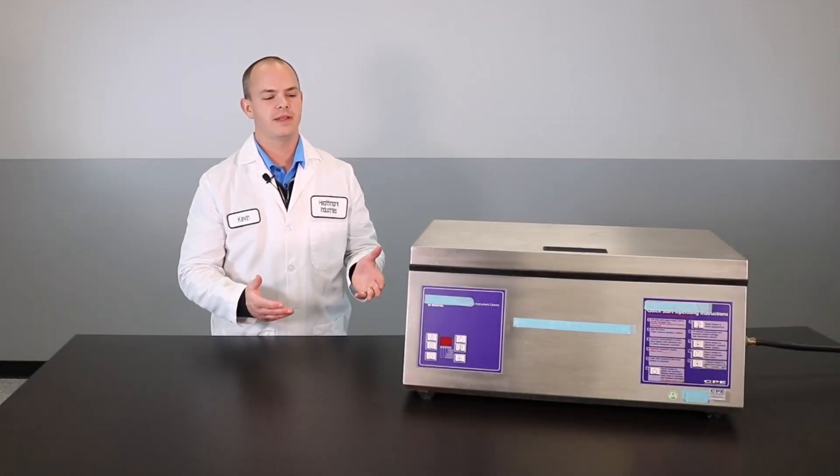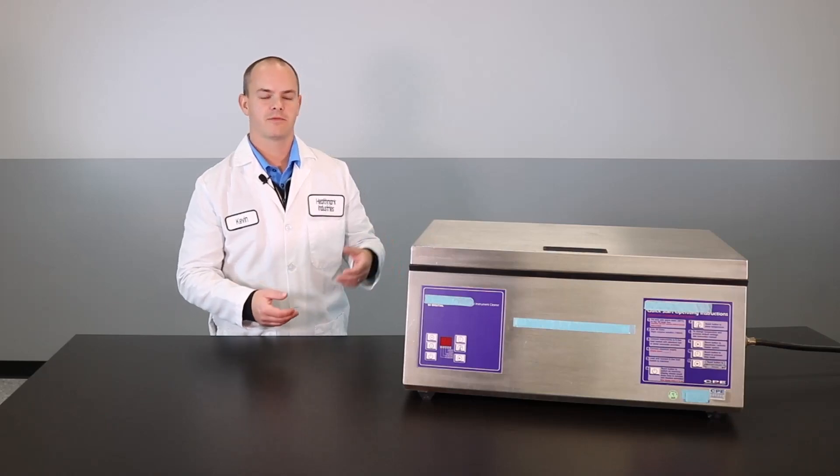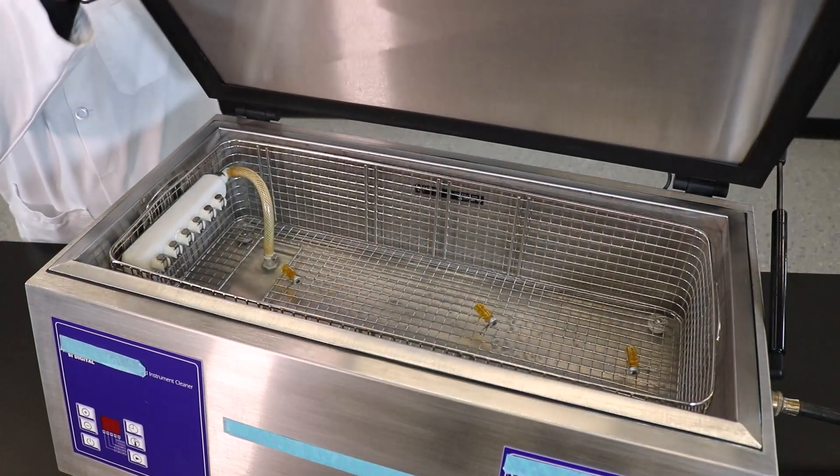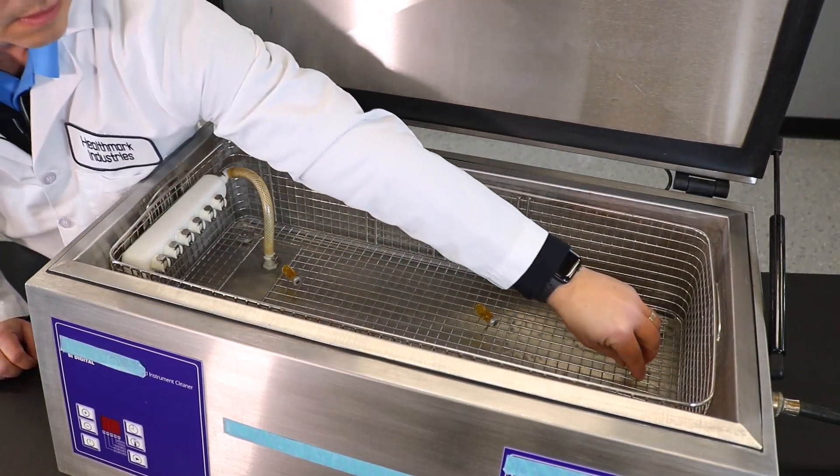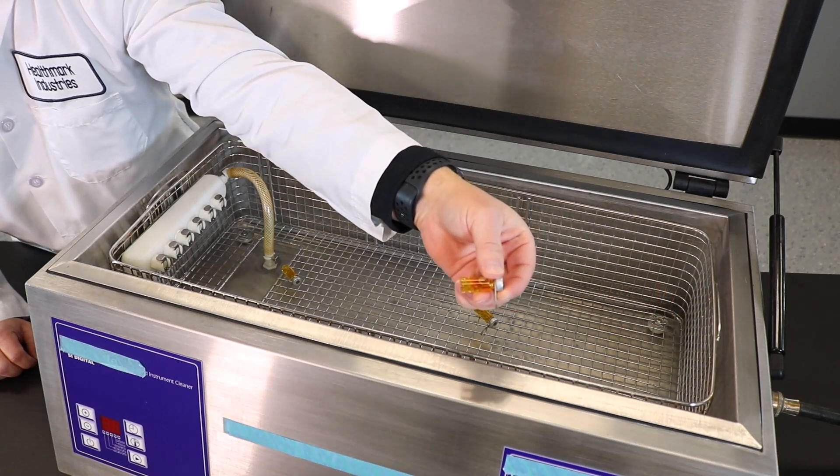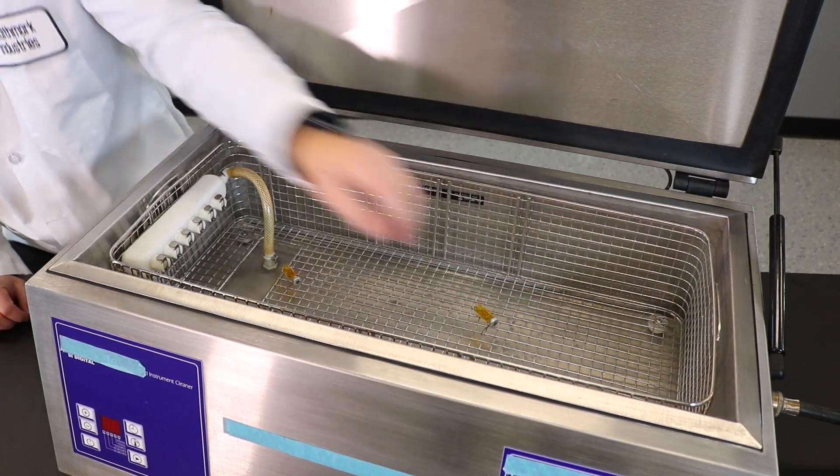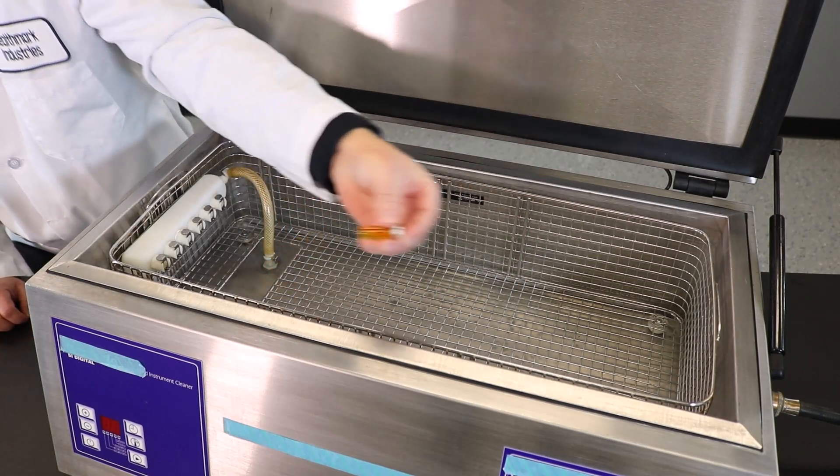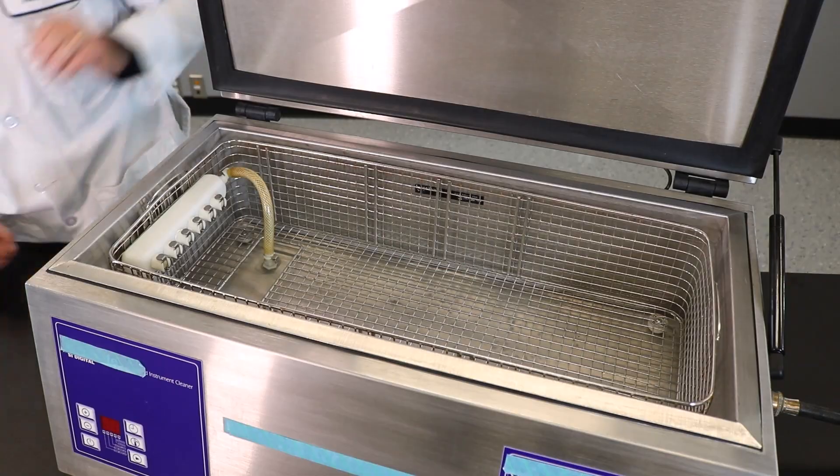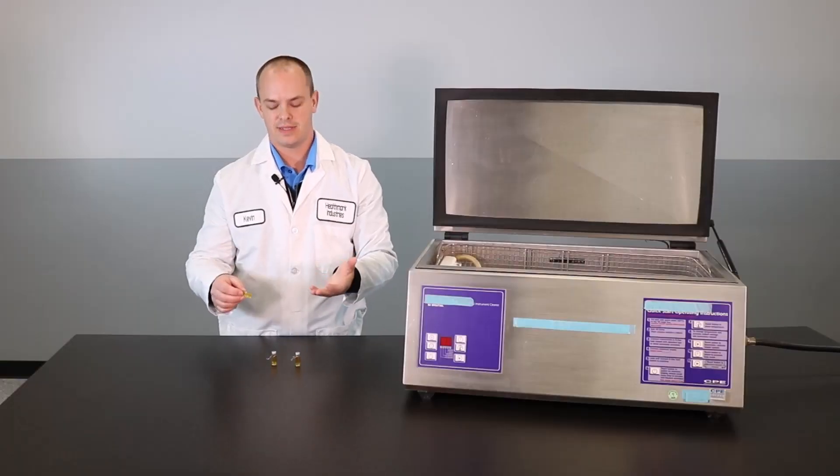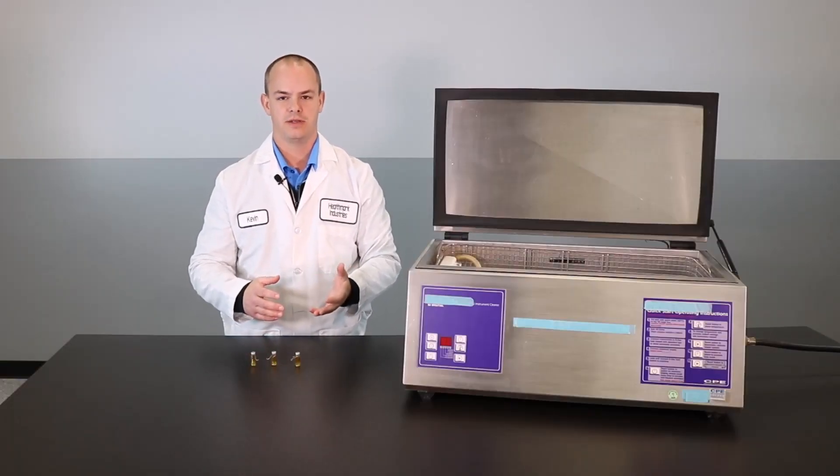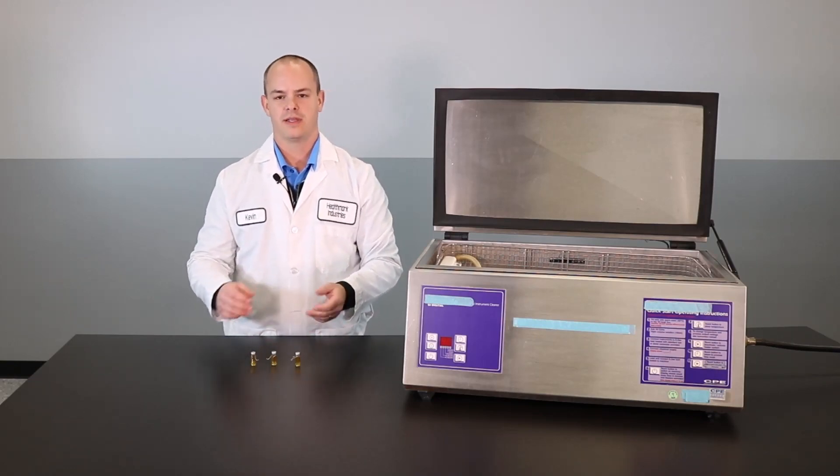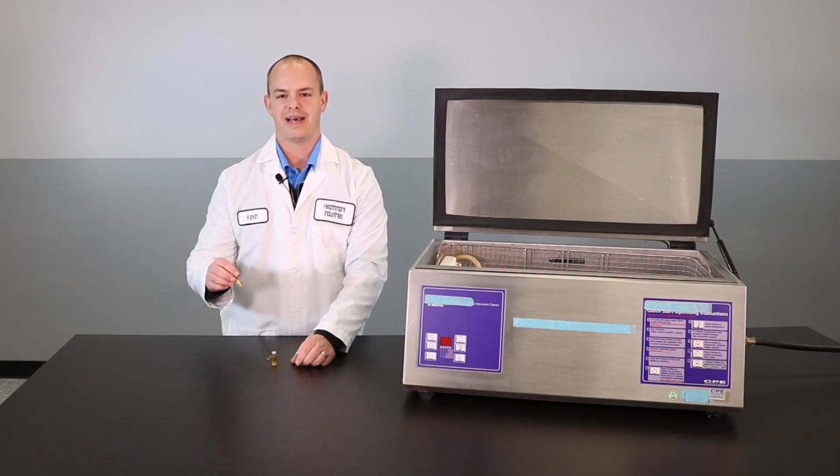All right. So our cycle is now complete, and it's time to check our SonoCheck whether or not it passed. So on this model, I have to lift the lid. Hopefully, you have an automated lid, but I lifted it up, and I'm already seeing that I have some yellow SonoCheck tests in here. And these yellow colors are indicator that the ultrasonic did produce cavitation, so it passed the test. So when you go to your documentation, make sure that you document that it passed the test.